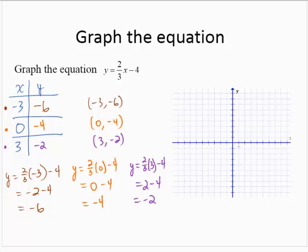Plotting those points on the axes, assuming a scale of 1 on each axis: negative 3, negative 6; 0, negative 4; and 3, negative 2. These points appear to be collinear, so I will draw the line that goes through the points.